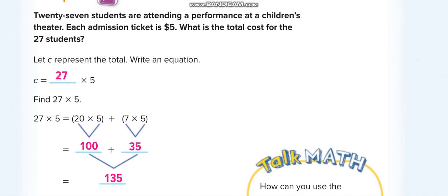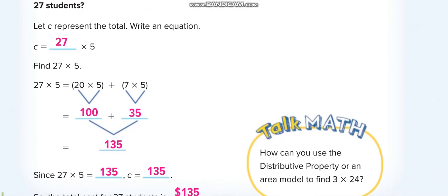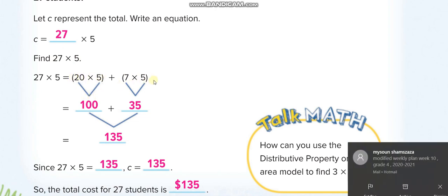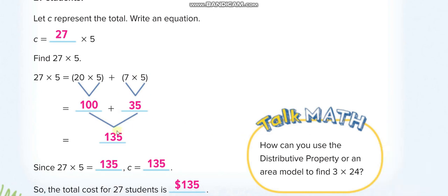On the next page, this is the same type of example. Here we are finding 27 times 5. We break 27 into two parts: 20 and 7. Then we multiply 5 with 20 first, then 5 with 7. 20 times 5 equals 100, and 7 times 5 equals 35. So the answer is 135.